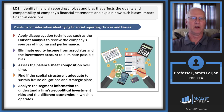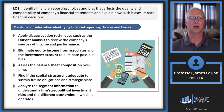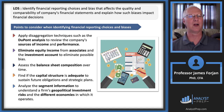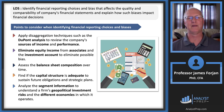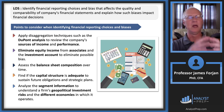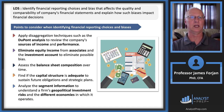Moving on to another LOS: points to consider when identifying financial reporting choices and biases. We just did this disaggregation — the DuPont analysis, which eliminates the equity income from associates and the investment account. What that does is it allows us to assess the balance sheet composition over time. Trend analysis is super important — we spent a whole reading on time series regressions, and this is one of those times when you can apply that.